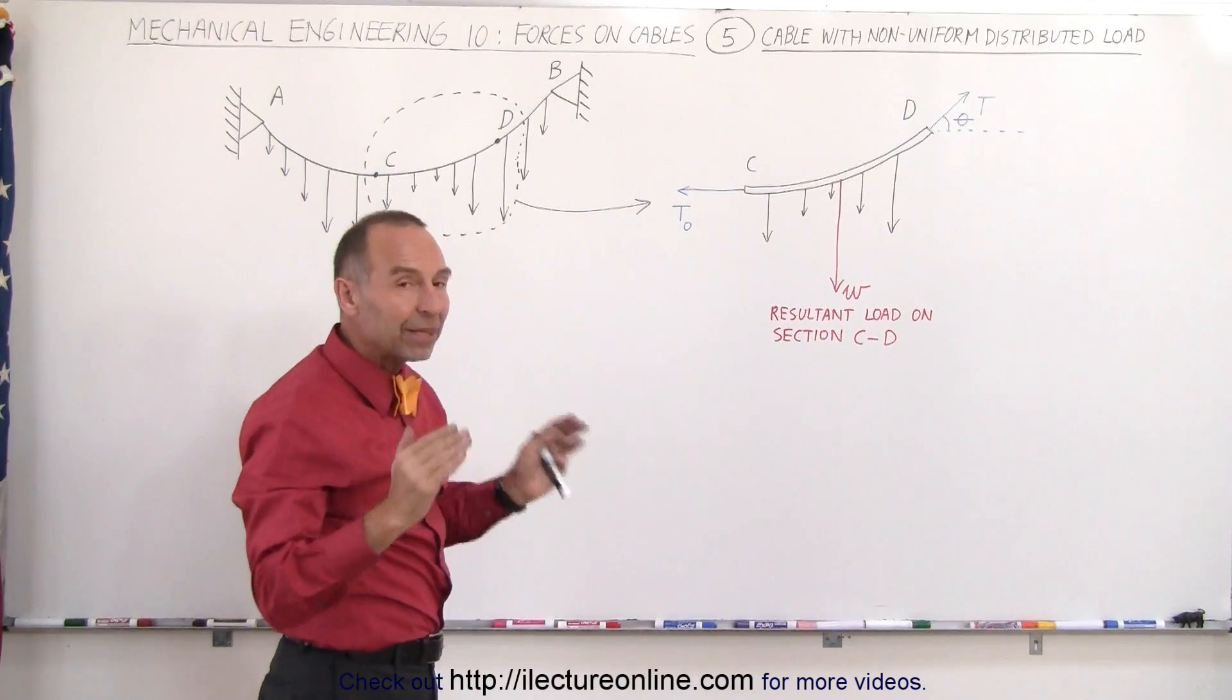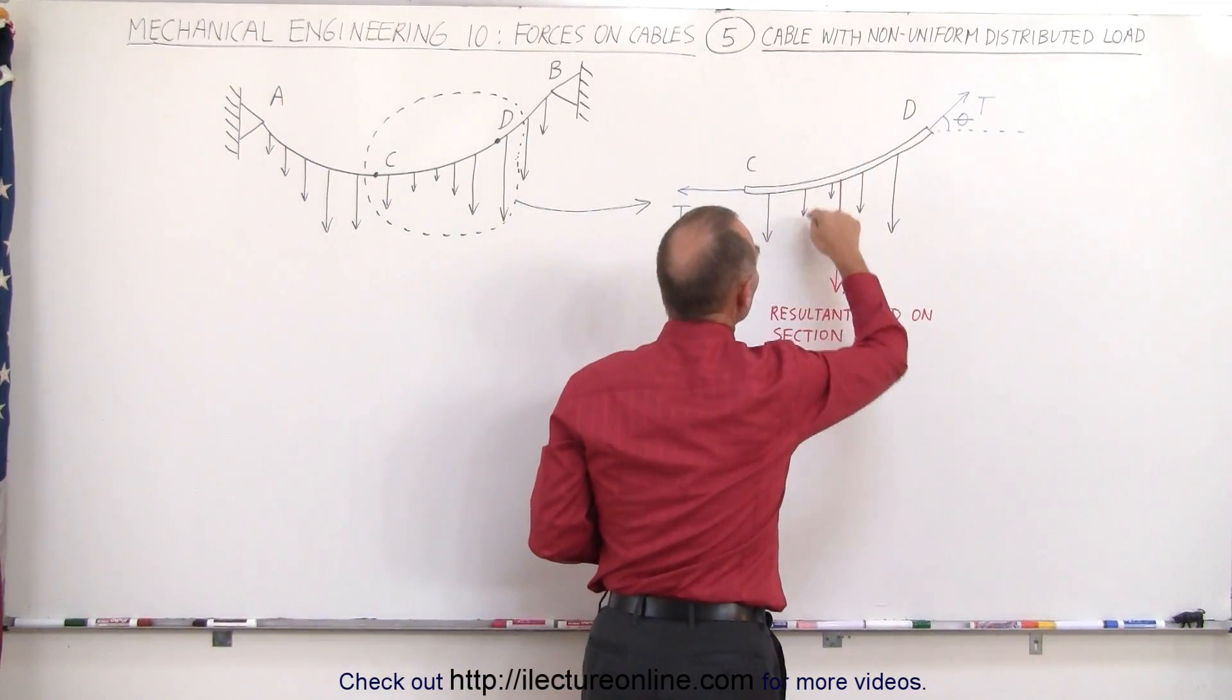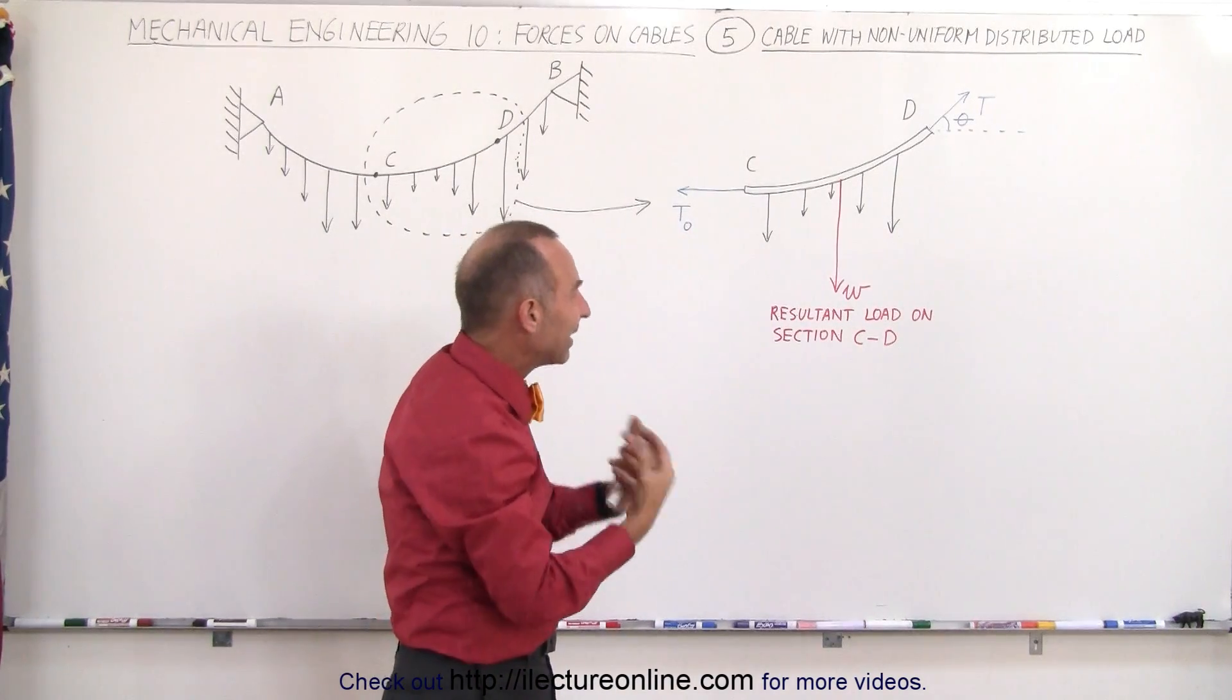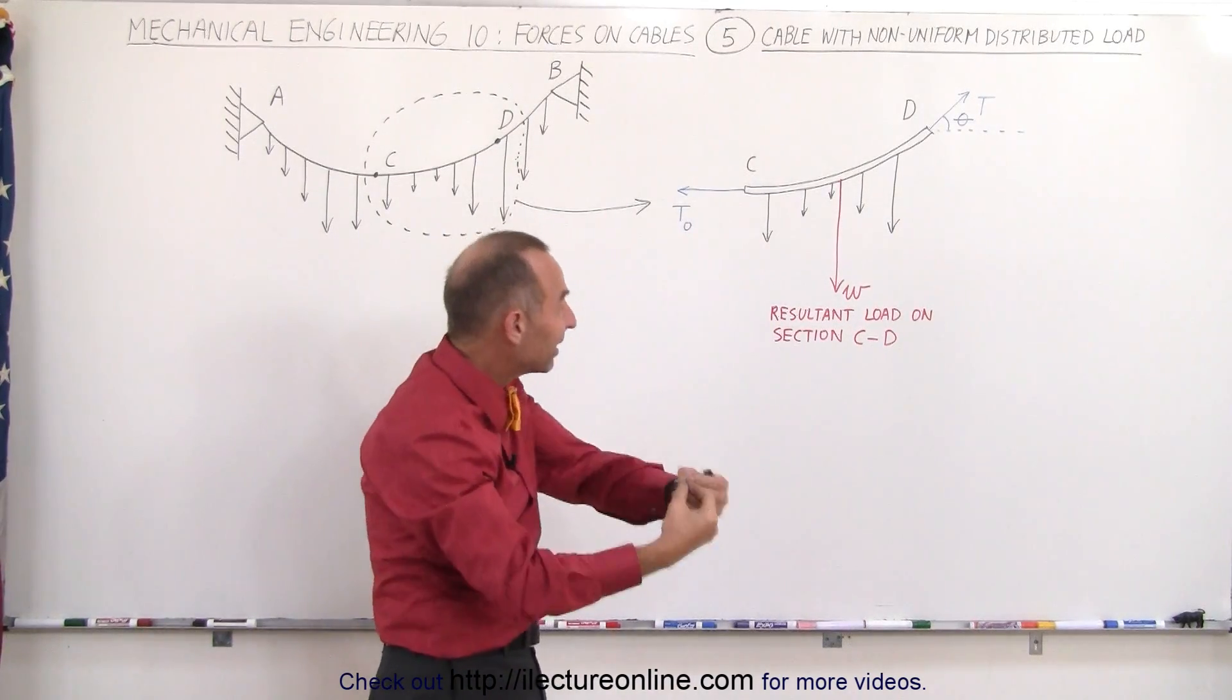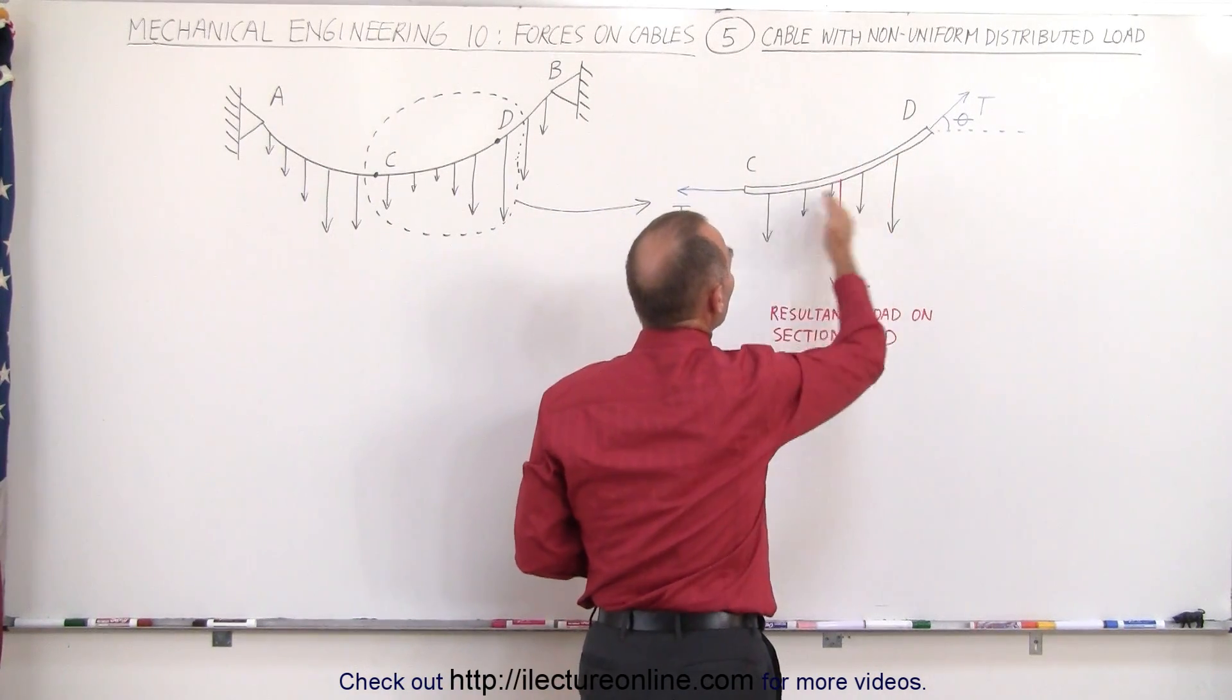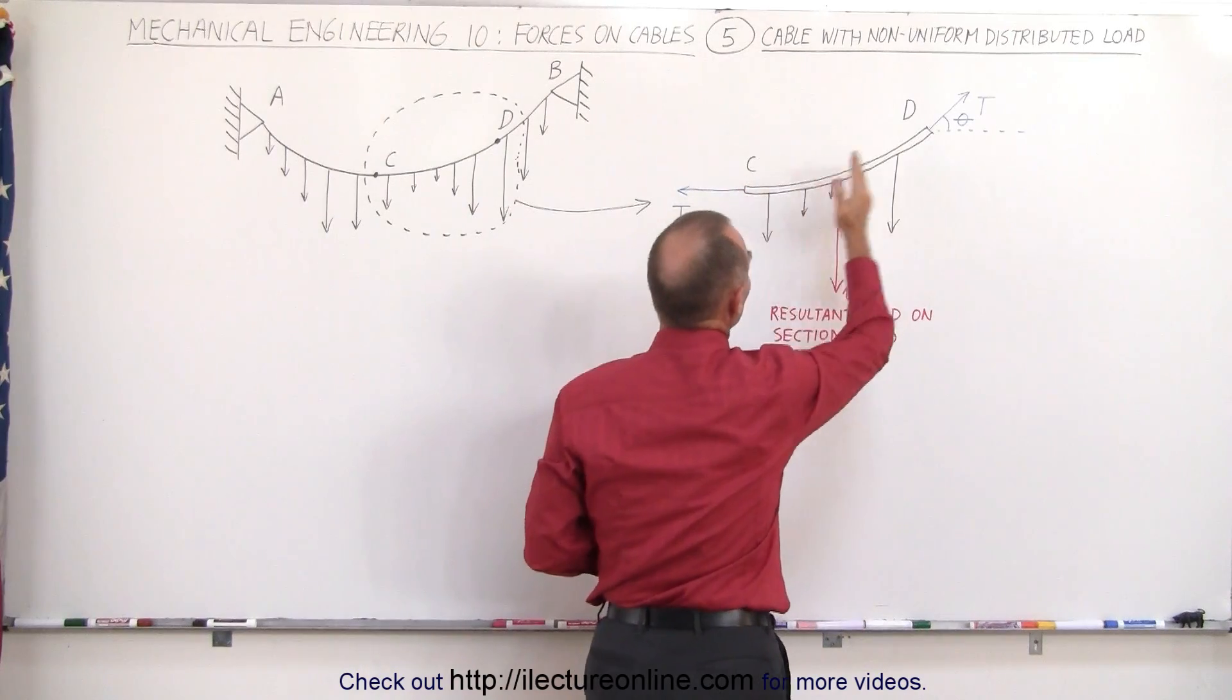Now, on that particular section of cable from C to D, we have various load forces. If we calculate the resultant force W, they'll simply be the sum of all the forces, all the load forces on the section from C to D.